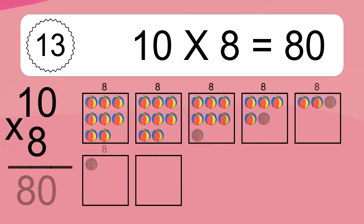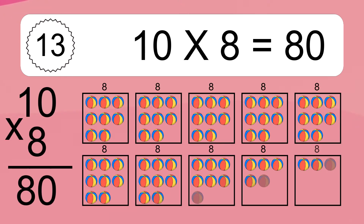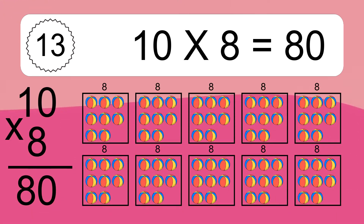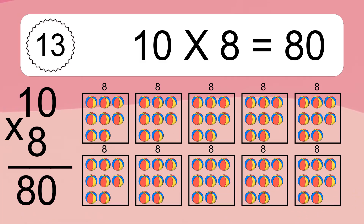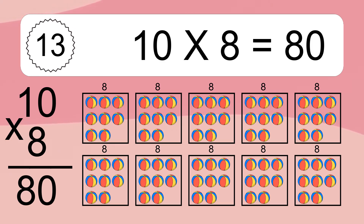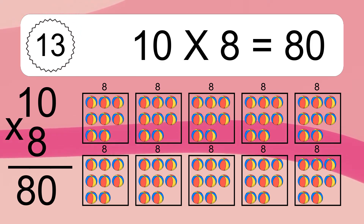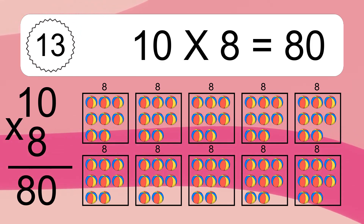10 times 8 equals what? 10 times 8 equals 80. We have 10 boxes and each box has 8 colorful balls inside. If you count all the balls in all the boxes together, you will have 10 times 8 balls. This equals 80 balls.